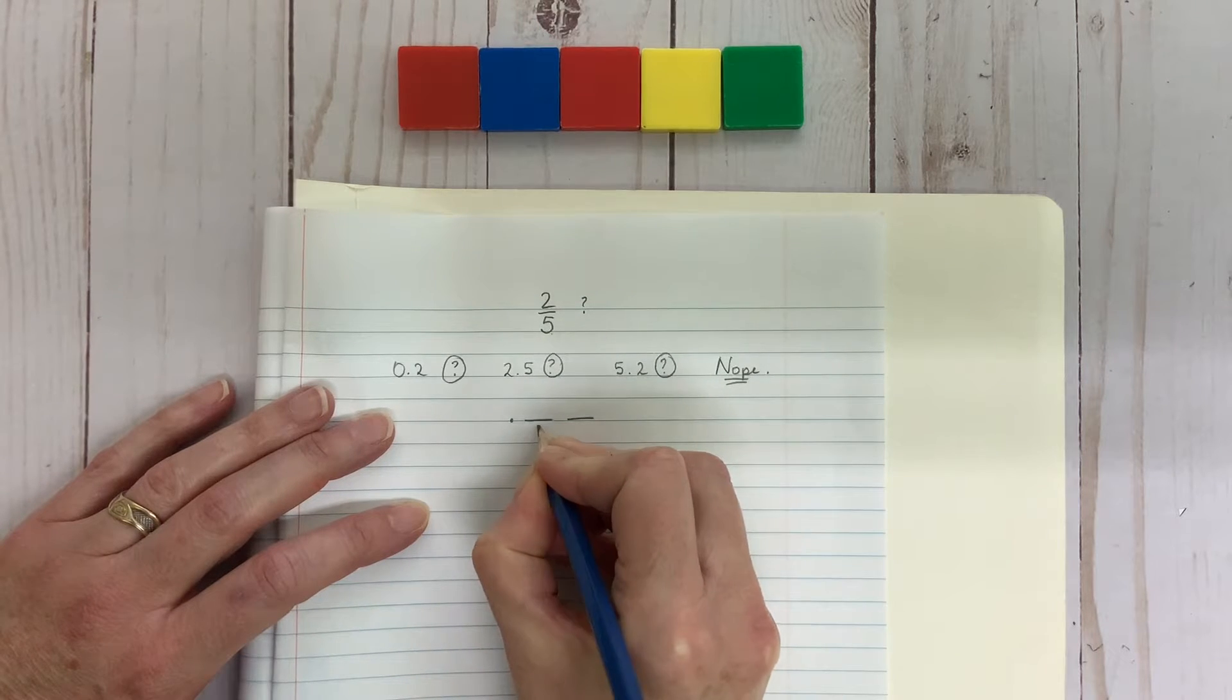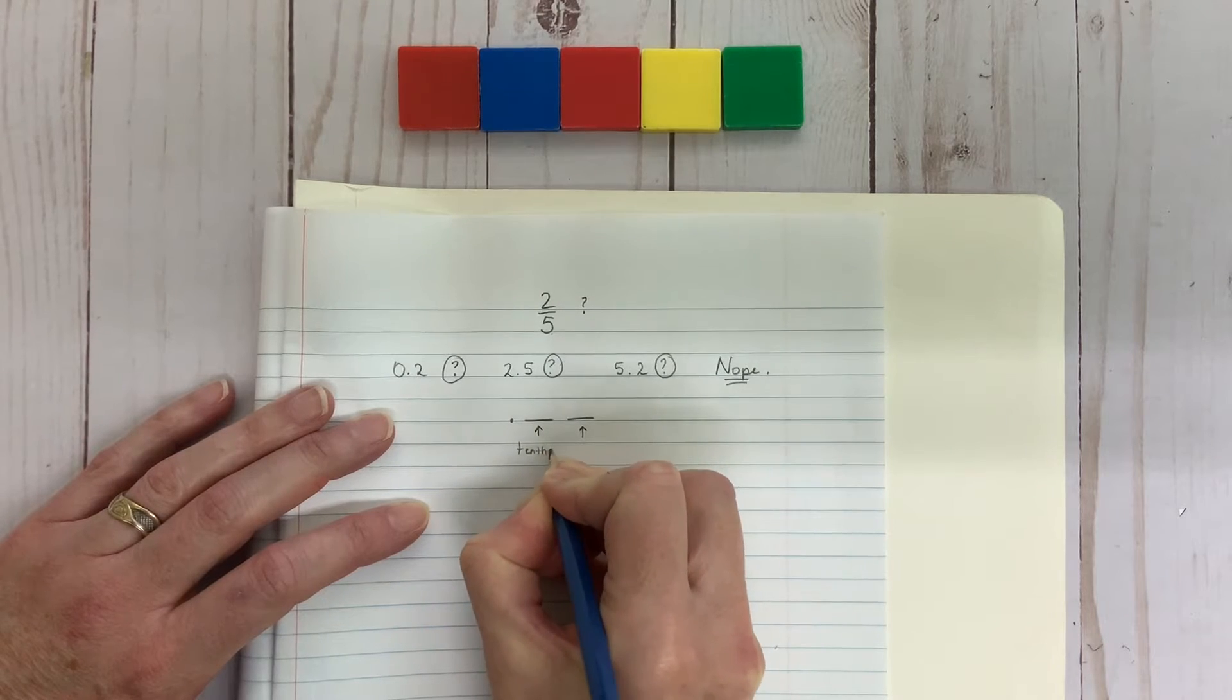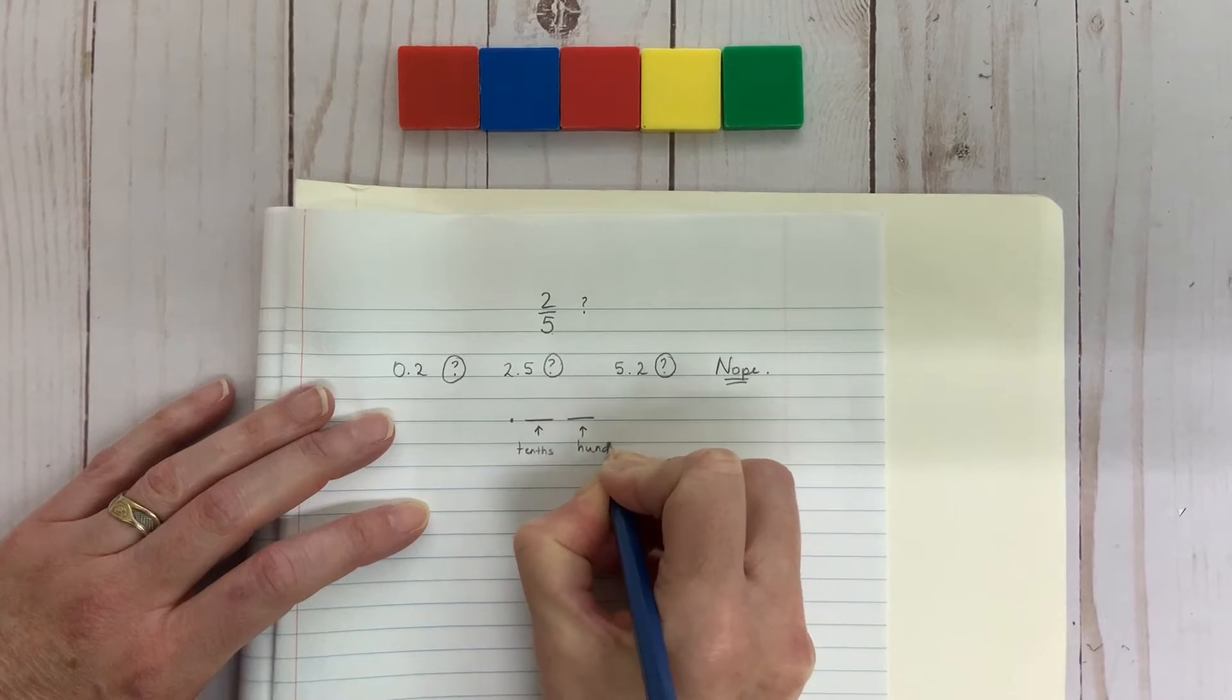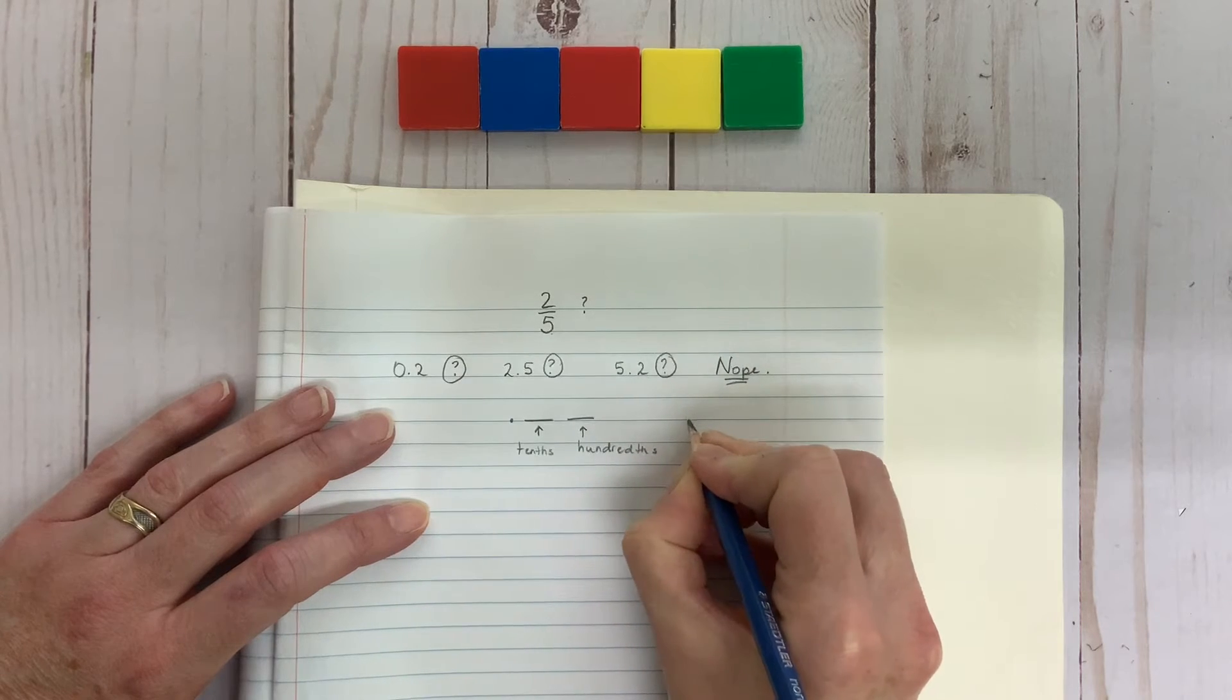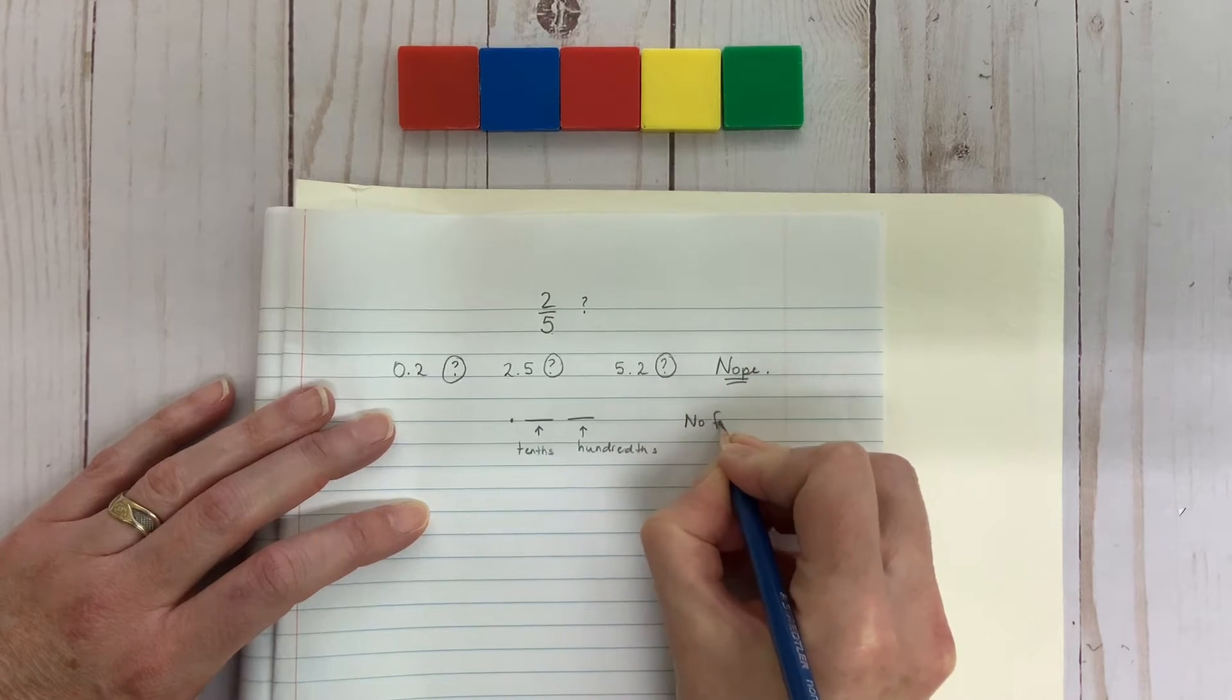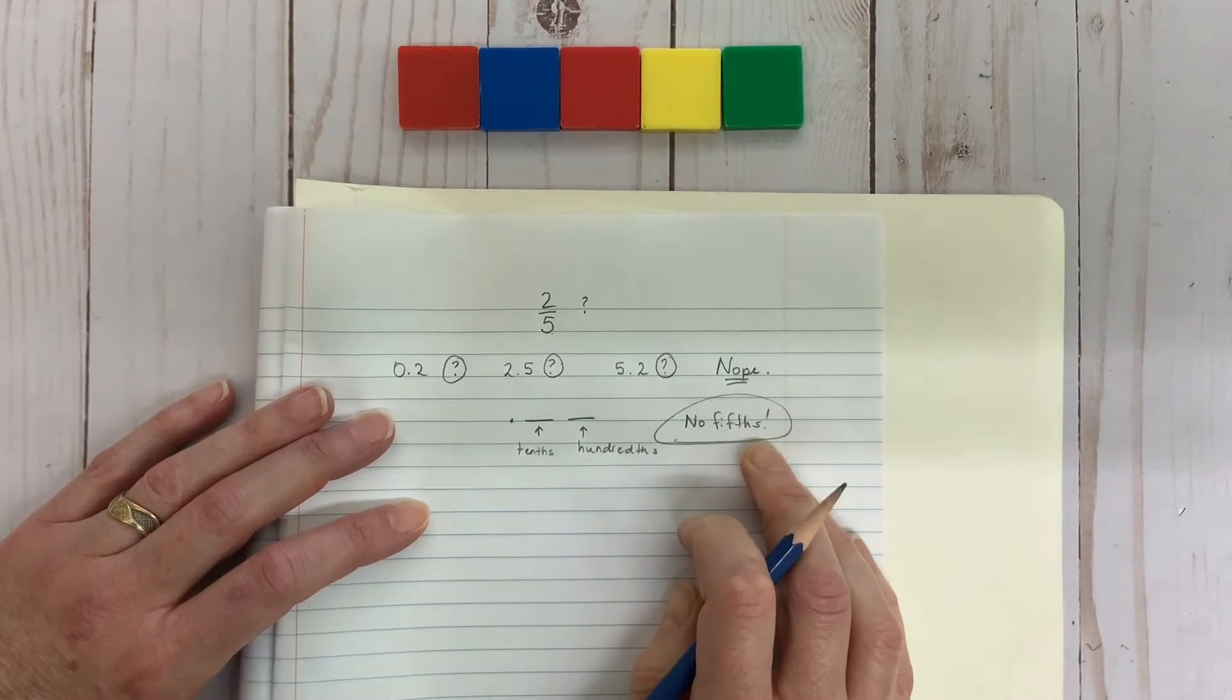Unfortunately, it is not that simple. You see, there is no place for fifths. Only places for tenths and hundredths. Well, and thousandths and ten-thousandths, etc. But we'll deal with those later. For now, only tenths and hundredths. That's it. Definitely no fifths place.